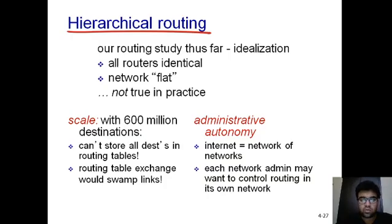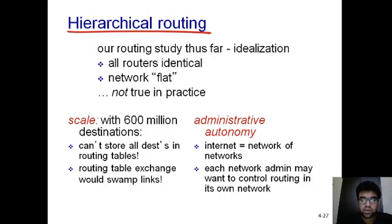We used those algorithms on small networks, like with six nodes or three nodes in an autonomous system. But the real scenario is completely different. Our study so far is an idealization: all routers are identical and we have a flat network with no congestion — simple networks on which we applied distance vector and link state routing algorithms.